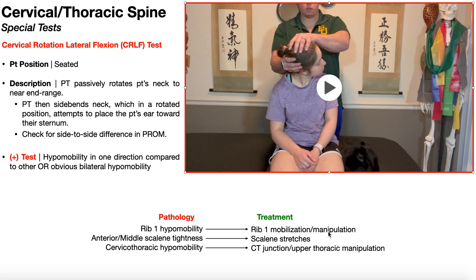You could also have a hypomobility of the first rib that's actually caused by tightness of the anterior and middle scalenes. Remember the posterior scalene inserts on rib two, so that wouldn't make any difference for rib one. But the anterior and middle scalenes insert on the first rib, and if they're tight, they will limit the movement of that first rib. The obvious treatment choice for this would be scalene stretches, particularly those targeting the anterior and middle scalenes.